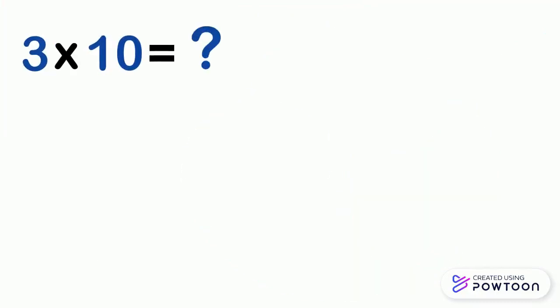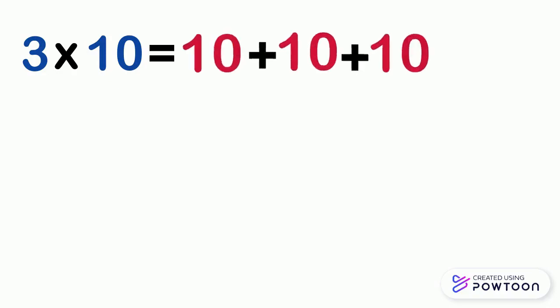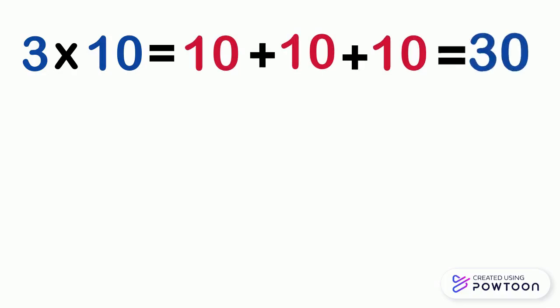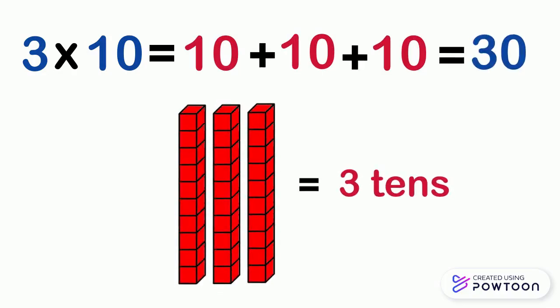Let's start multiplying 3 by 10. To multiply 3 by 10, we should repeat number 10 three times. So it's 10 plus 10 plus 10 equals 30. So it is 3 tenths. So 3 times 10 equals 3 tenths.